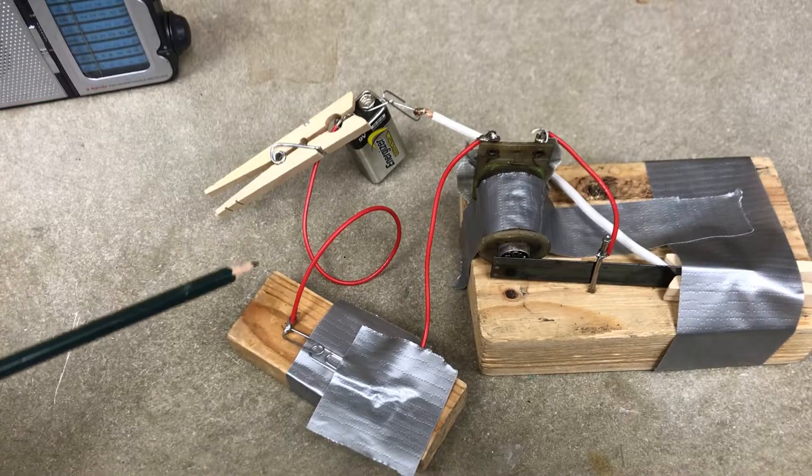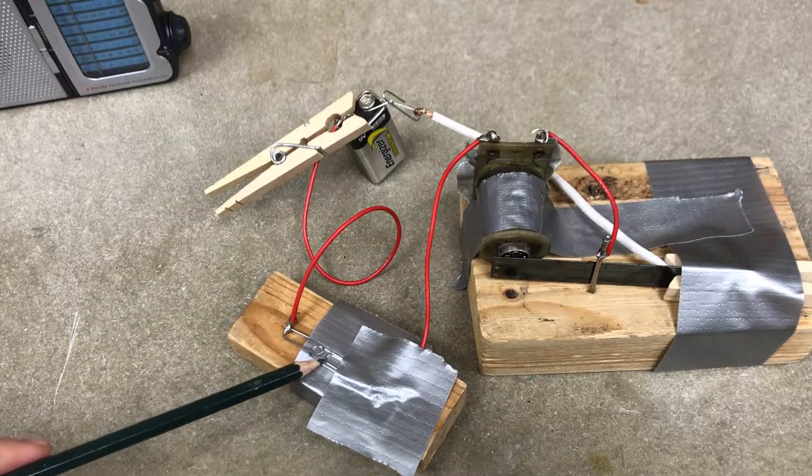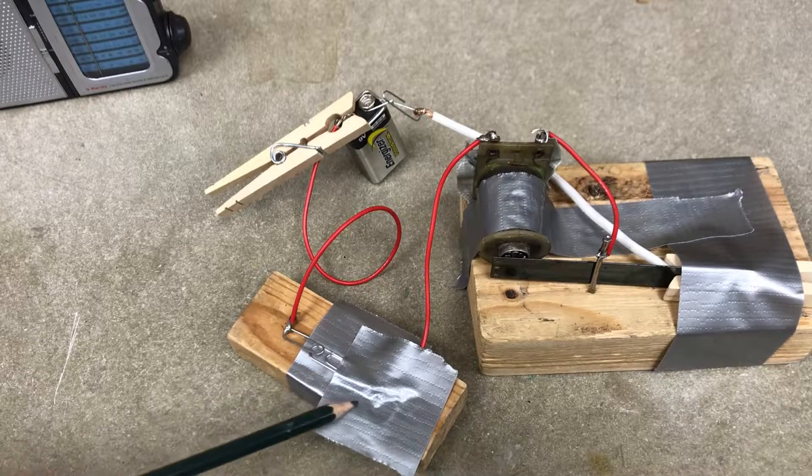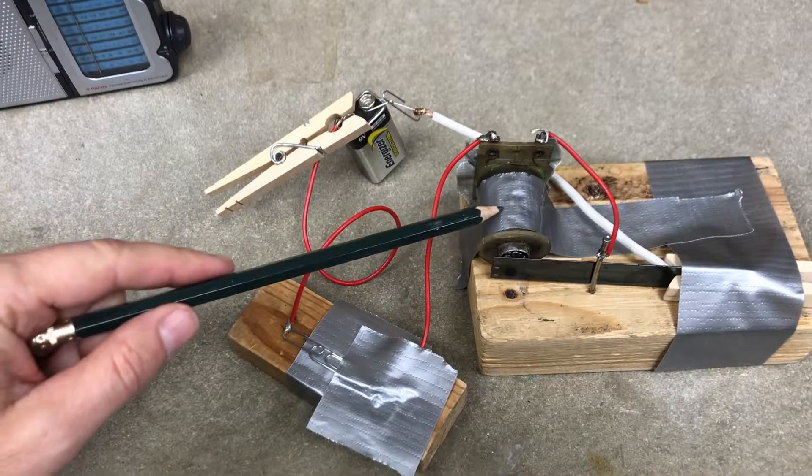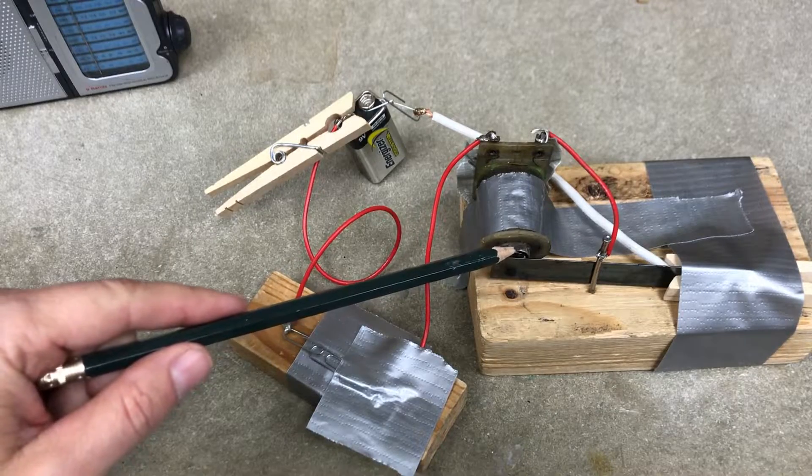So here I have a battery and it's connected to these two paper clips and these act as a switch because you push down they make a connection and it goes up here to this coil of wire. That's all it is. Well, it's a coil of wire, it's got some nails in there too.